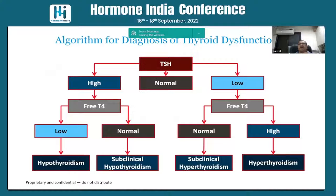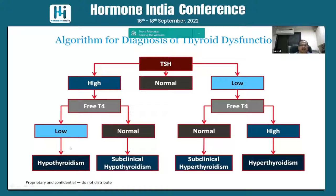This is the algorithm for thyroid function: if TSH is normal, we call the patient normal. If TSH is high, we do free T4 — if it is low, we diagnose hypothyroidism; if free T4 is normal with mildly elevated TSH, we call it subclinical hypothyroidism. When TSH is low, we do free T4 — if normal, subclinical hyperthyroidism; if T4 is high with suppressed TSH, hyperthyroidism. TSH high with low T3/T4 is hypothyroidism.